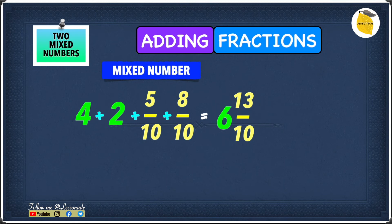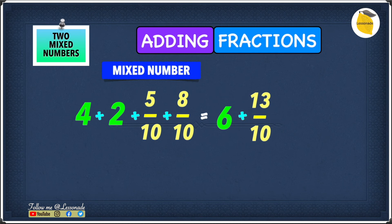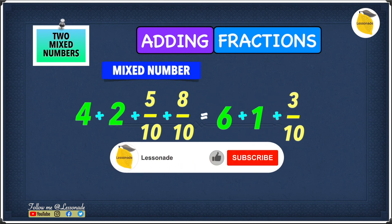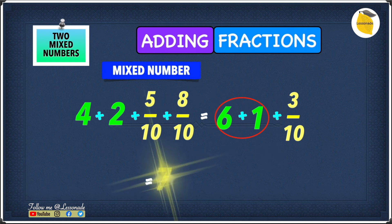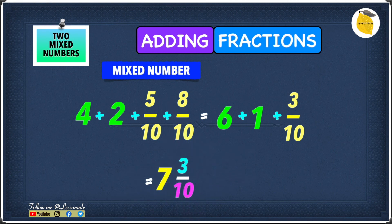But notice that 6 13 over 10 is not actually a mixing number, because the fraction 13 over 10 is improper, not proper. We have to convert 13 over 10 into a mixing number first. 13 over 10 as a mixing number is 1 3 over 10, which we can also write as 1 plus 3 over 10. So we now have 6 plus 1 plus 3 over 10. Since 6 plus 1 is 7, our final answer is 7 3 over 10.